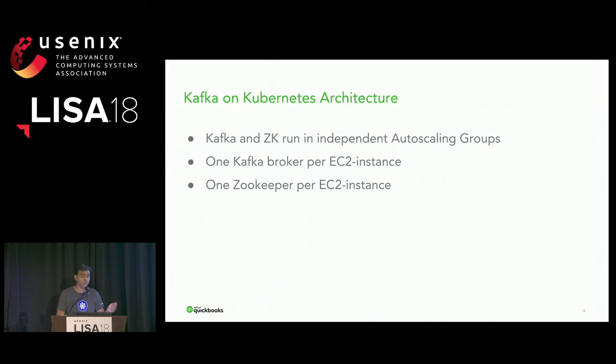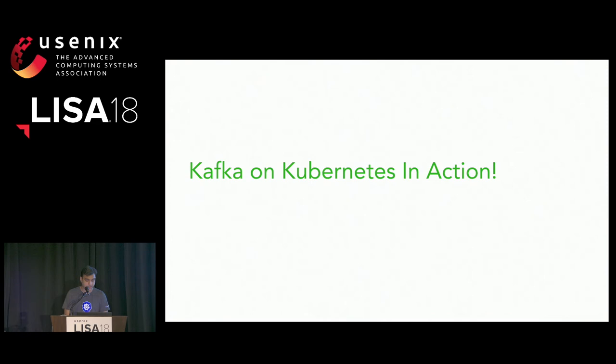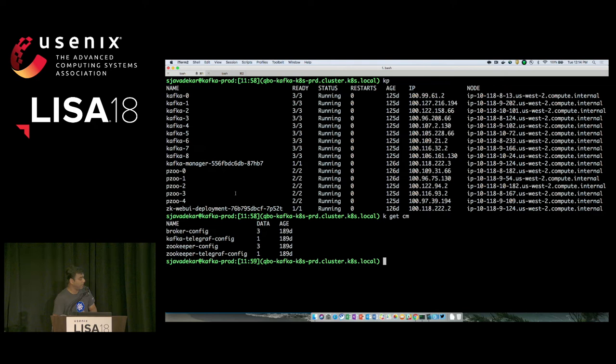Kafka and Zookeeper run in their own individual auto-scaling groups. One Kafka broker per instance — we didn't want multiple Kafka brokers on the same instance because we didn't want two of them to go down if that EC2 instance goes down. And one Zookeeper per EC2 instance for the same reason.